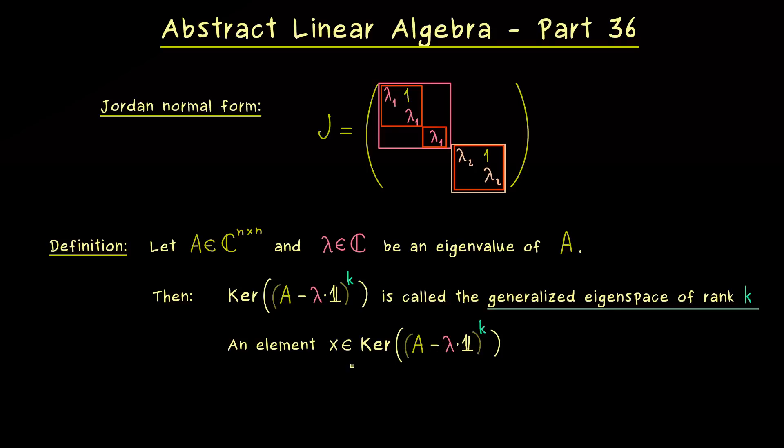This is quite simple. We just take an element from our kernel here. But we also want that x is not an element from the kernel before. This means we subtract the set where we have the kernel with the power k minus 1. And this guarantees that we actually have the rank k for this vector. And that also explains the name such an x is called a generalized eigenvector of rank k.